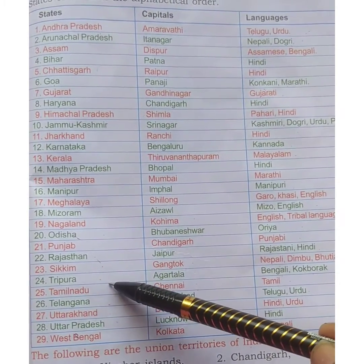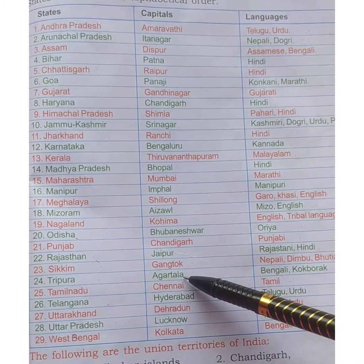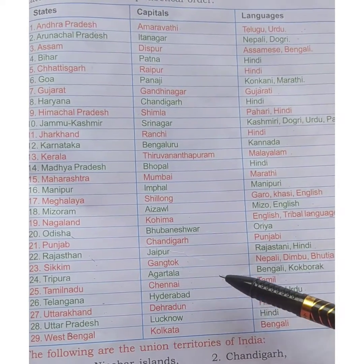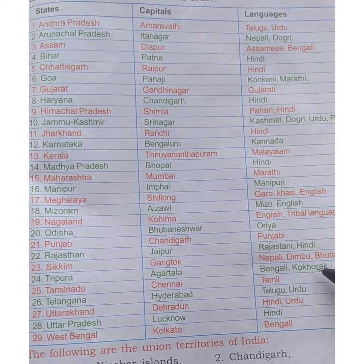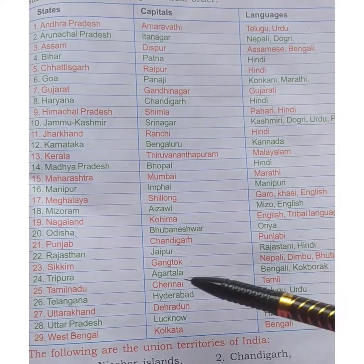Next is Tripura. The capital is Agartala. They speak Bengali and Kokborok.